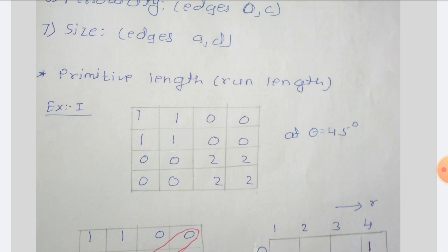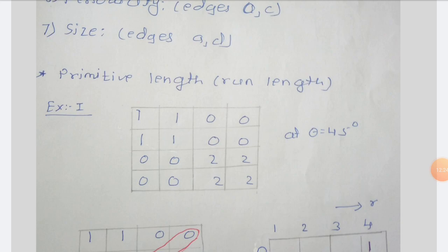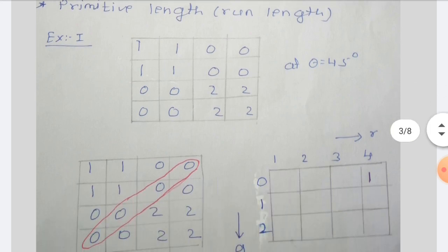Now let us see Example 1. The input image is of size 4×4 at theta equal to 45 degrees. We have to calculate the primitive length for the given image. The pixel values are: first two rows are [1,1,0,0] and [1,1,0,0], followed by [0,0,2,2] and [0,0,2,2], and the last row is [1,2,0,0]. The size of the image is 4×4. We will calculate the run length or primitive length for this given image at theta equal to 45 degrees.